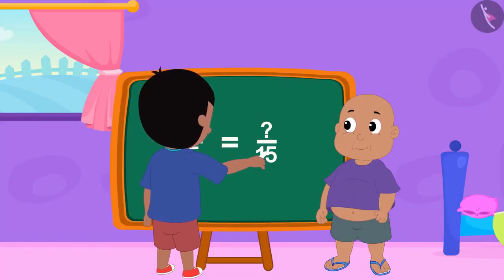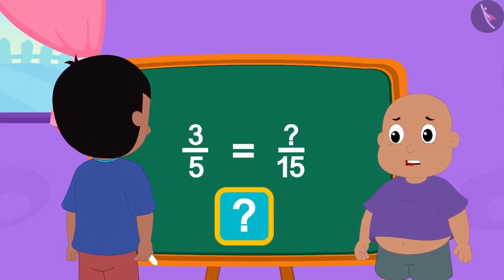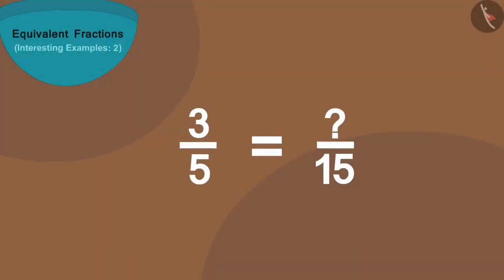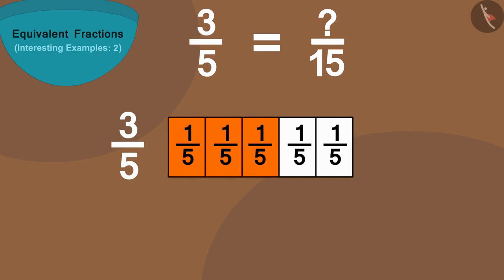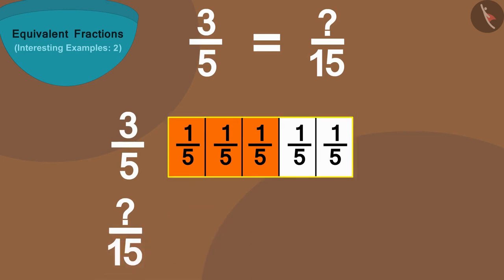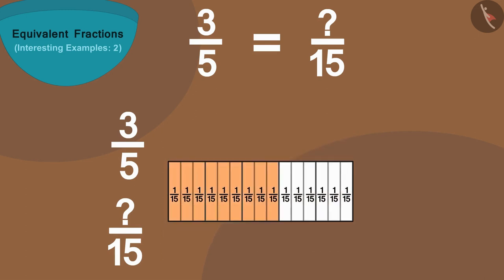This is Raju's next fraction. Children, can you find this fraction? Let's find it using a different shape. We can show this fraction by dividing such a strip into 5 equal parts and coloring 3 parts in it. Now how many parts are there in its equivalent fraction? 15. Come, let us make a strip of equal length of this strip just below it and divide it into 15 equal parts.